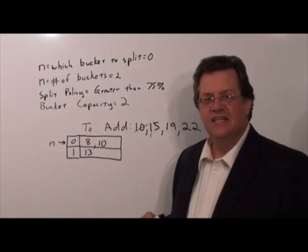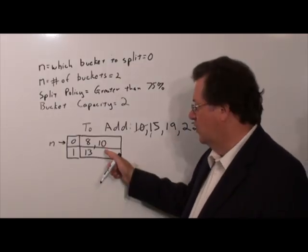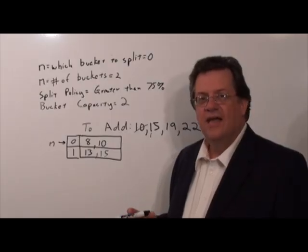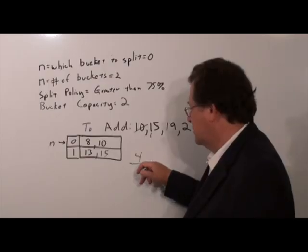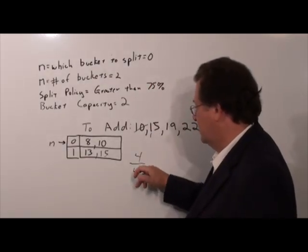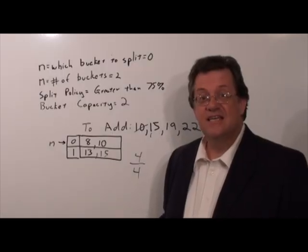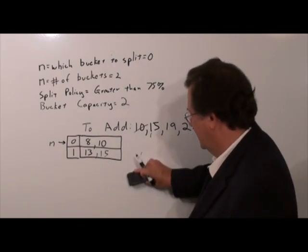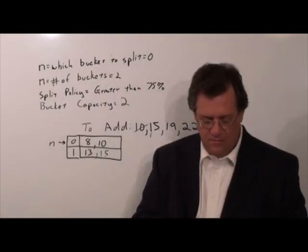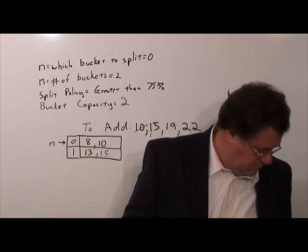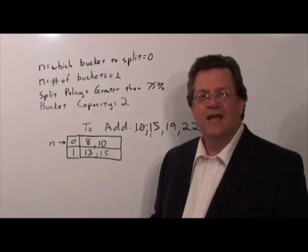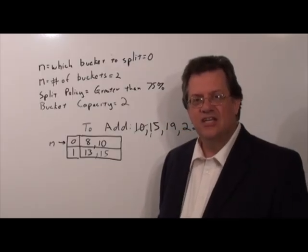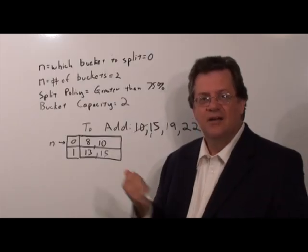Now let's try to add the 15. Obviously 15 mod 2 is a remainder of 1, so we'll be placing that in bucket 1. Notice we've not exceeded the bucket capacity of 2. However, when we take a look we have 4 items divided by 2 buckets times bucket capacity of 2 — that's obviously 1, and since that's greater than 75 percent we need to do a bucket split. Now let me explain how this bucket split works. In extendable hashing, when we had to change the directory we literally doubled the size from 2 to 4 to 8 to 16. In linear hashing, all we do is add one bucket at a time any time we need to do a split.